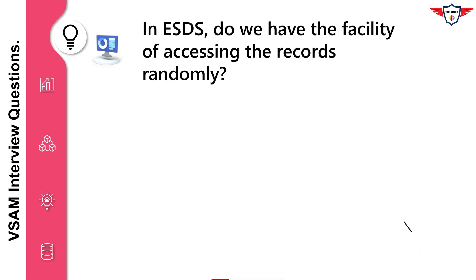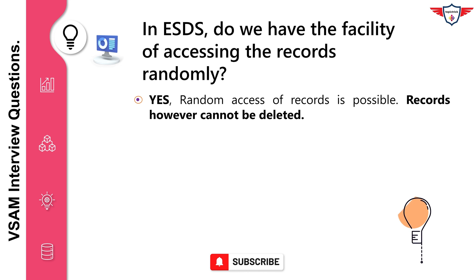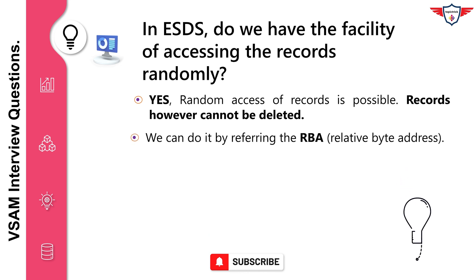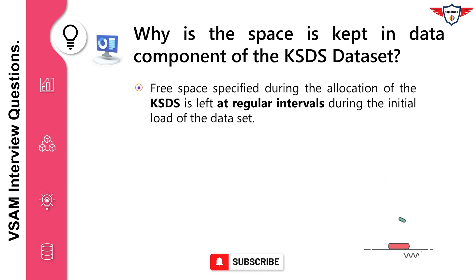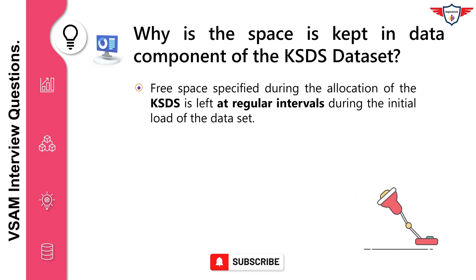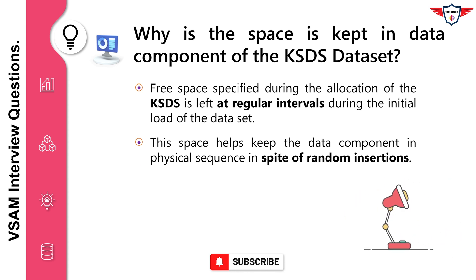In ESDS, do we have the facility of accessing the records randomly? Yes, random access of records is possible. Records, however, cannot be deleted. We can do it by referring the RBA (Relative Byte Address). Why is free space kept in the data component of the KSDS dataset? Free space specified during the allocation of the KSDS is left at regular intervals during the initial load of the dataset. This space helps keep the data component in physical sequence in spite of random insertions.